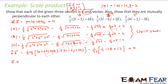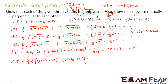Now let us find A dot C. Again 1 by 7 times 1 by 7, so 1 by 49 into: 2i into 6i is 12, plus 3 times 2 is 6, and 6 times minus 3 is minus 18. This also becomes 12 plus 6 minus 18, that is 0.